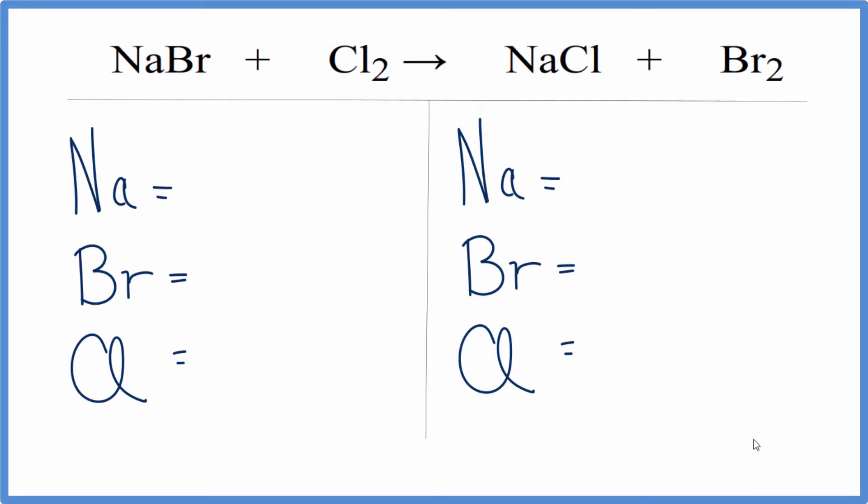We'll add up the atoms on each side of the equation. We have one sodium, one Br, and two chlorines. Over here on the product side, we have one sodium, two bromines, and one chlorine.